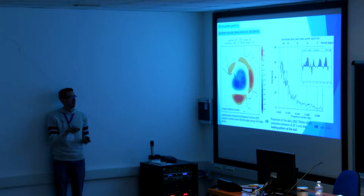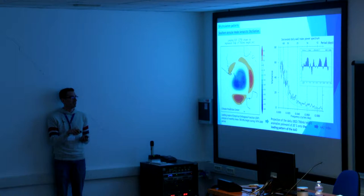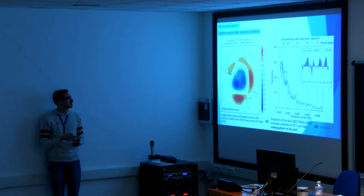Looking at the daily SAM index over the last three months, you see some slow variation in the intraseasonal time scale. If you do a power spectrum of the index, you get peaks of variability around 57 days and also around the 30 to 40 day band of variability. So this can be one important mode of intraseasonal variability in the Southern Hemisphere.